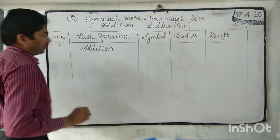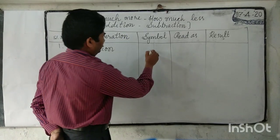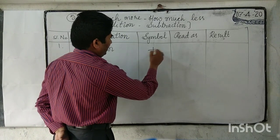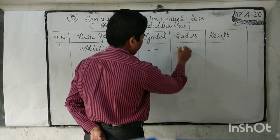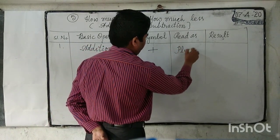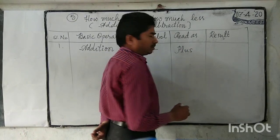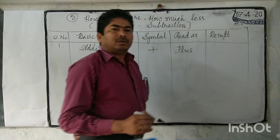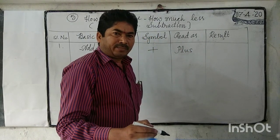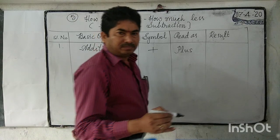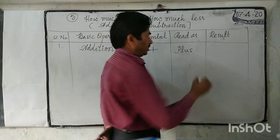Addition: the symbol of addition is plus. The result of addition is sum or total.